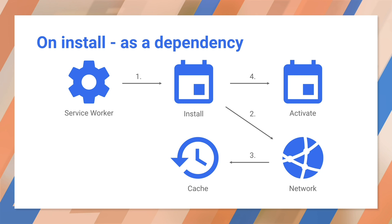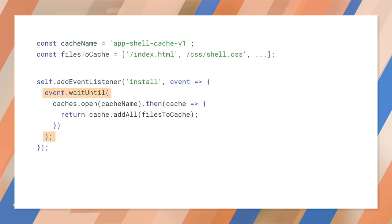— basically anything you'd consider a core static component of the current version of your site: things that would make your site entirely non-functional if they failed to fetch, equivalent to what a native app would include in its initial download package. Be aware that while this happens, any previous version of your Service Worker is still running and serving pages, so the things you do here mustn't disrupt that. Event waitUntil takes a promise to define the length and success of the install. If the promise rejects, the installation is considered a failure and this Service Worker will be abandoned.